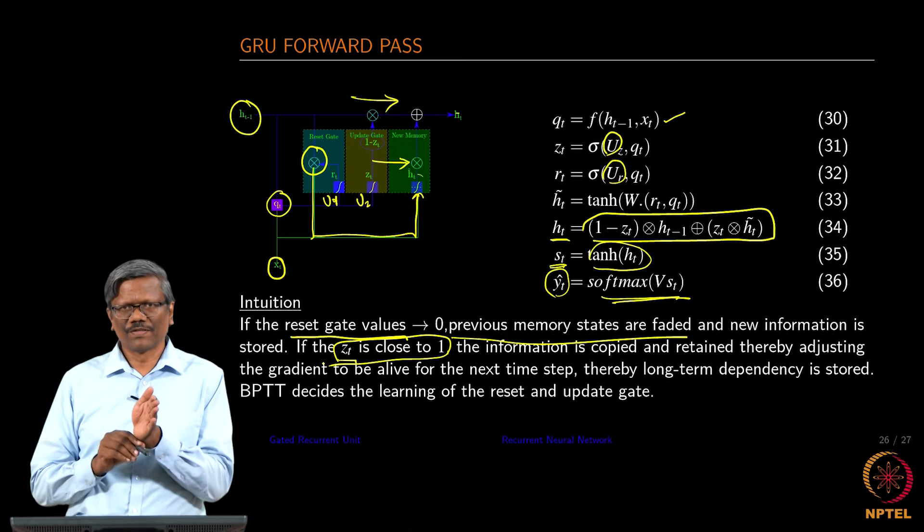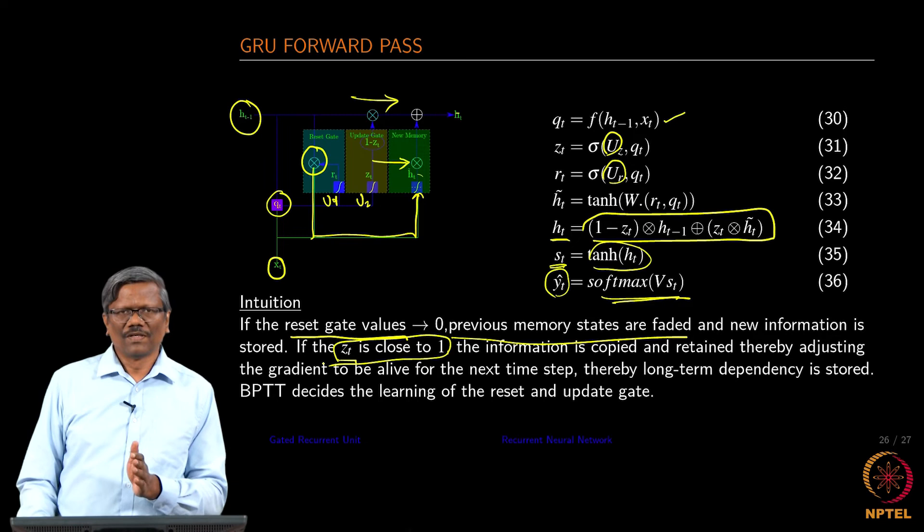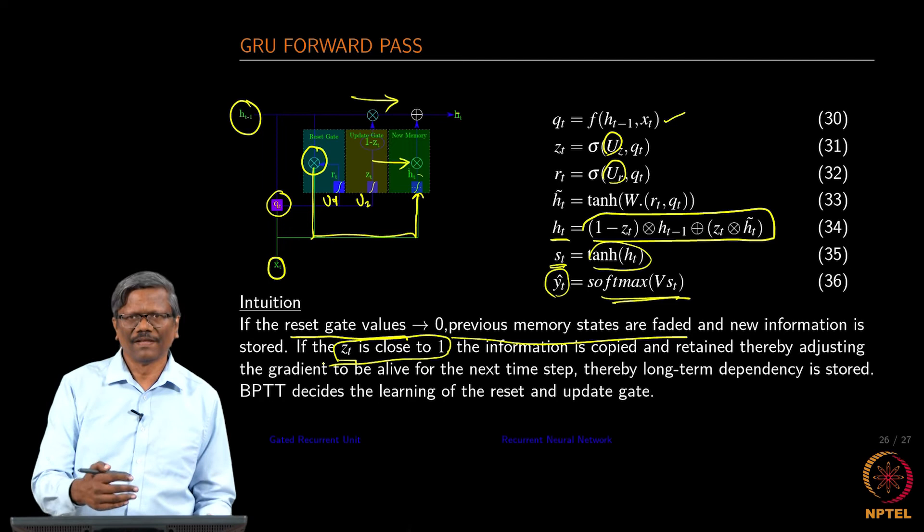So that when you do the back propagation you still manage to find that. You are able to really do the gradient descent properly and then the gradients are behaving properly because we are taking care of the derivatives during the forward pass itself using these gates.